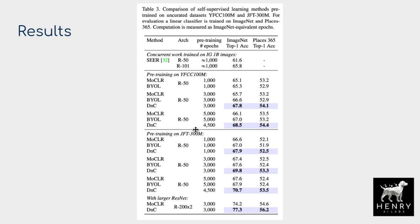For a fixed epoch budget, the DnC algorithm improves over both MoClear and Bootstrap Your Own Latent using ResNet-50 architectures, and also scales to ResNet-200 (likely with a width multiplier on feature maps), showing a large improvement over just doing MoClear—which is essentially the same idea as BYOL, SimCLR, and MoCo—without the intermediate algorithmic structure of stage one, clustering, expert models, and distillation. Performance improvements hold across different epoch allocations.